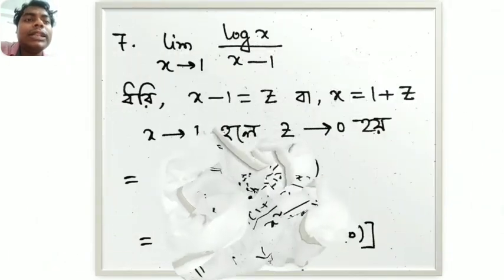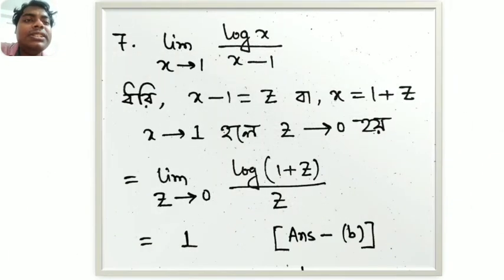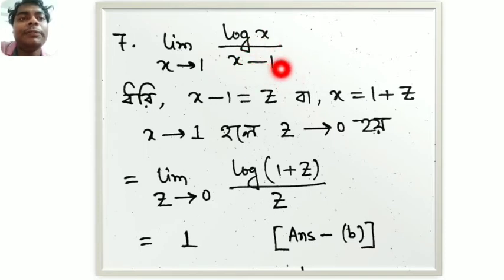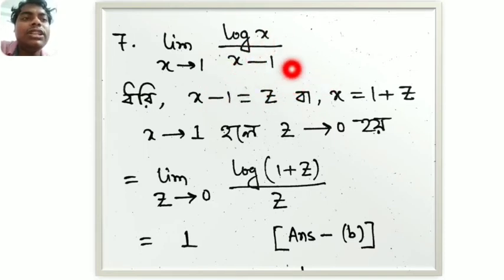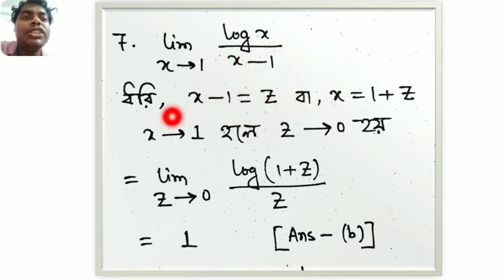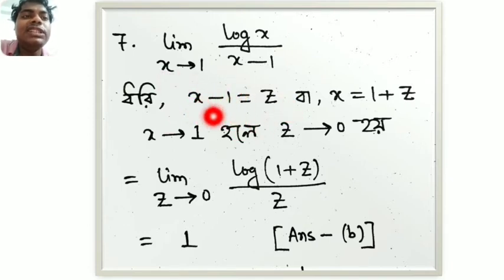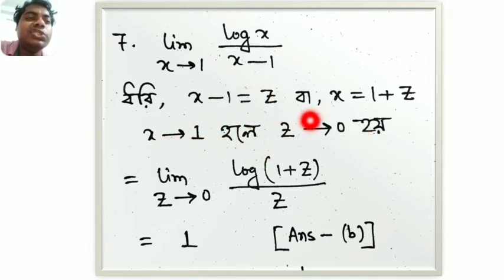Next question: limit x tends to 1 of log x by x minus 1. We substitute x minus 1 equals z, so when x tends to 1, z tends to 0.